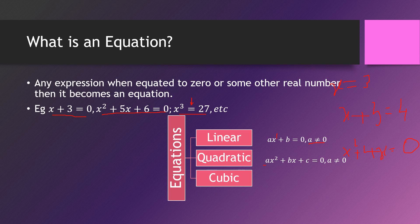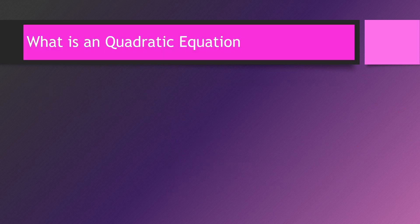A quadratic equation is of the form ax squared plus bx plus c equals 0, where the highest degree is 2. In this chapter we'll be focusing on quadratic equations. A cubic equation is ax cubed plus bx squared plus cx plus d equals 0. A linear equation always gives a straight line, and quadratic and cubic equations always give curves.